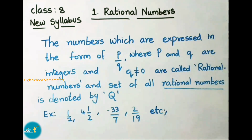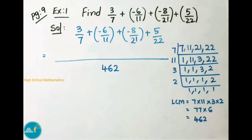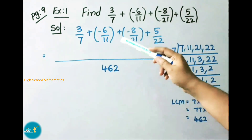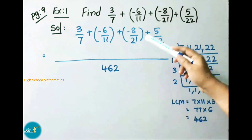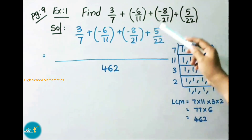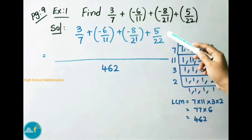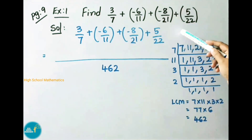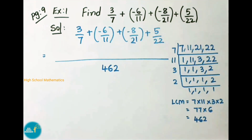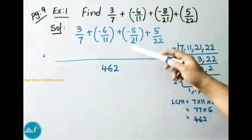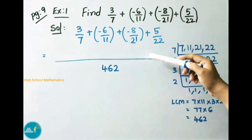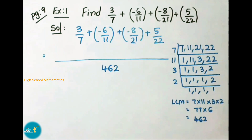Now we shall see example sums. See page number 9. Example 1: find 3 by 7 plus minus 6 by 11 plus minus 8 by 21 plus 5 by 22. Let us see the solution. We have written the question: 3 by 7 plus minus 6 by 11 plus minus 8 by 21 plus 5 by 22.